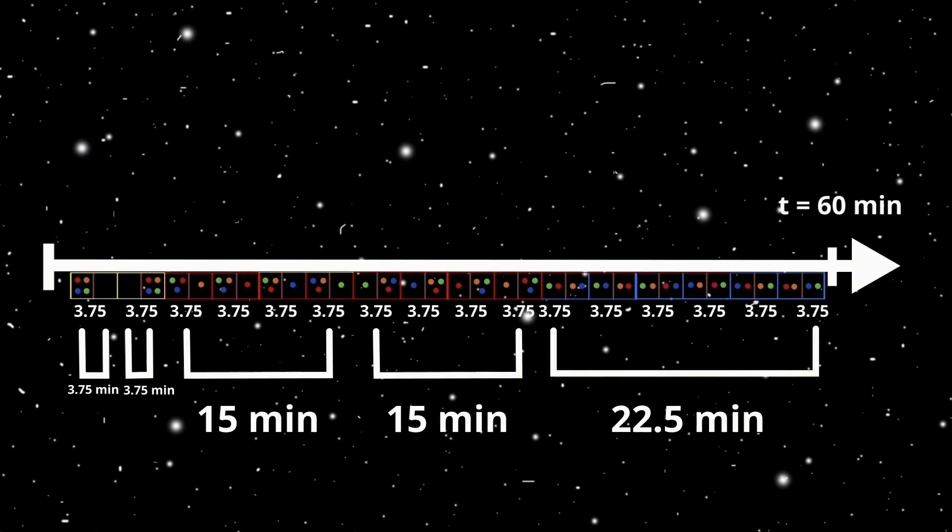You can see that the system will spend most of its time in the state of equal distribution, which has the most multiplicity. However, if our system was in the order of 10 to the 23 molecules, we can confidently say that the whole 60 minutes would correspond to an equal distribution.